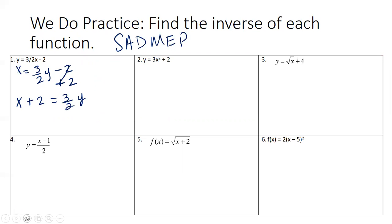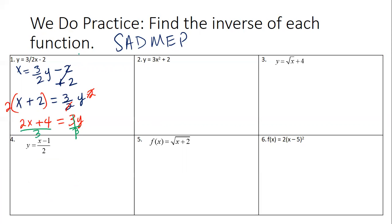Next: is there anything I can multiply or divide to get y? A fraction is a combination of multiplication and division — it's dividing by two in the denominator, so to get rid of it I multiply. I multiply everything on the other side by two, giving me 2x + 4 = 3y. Y is not by itself yet, so I divide by three. My inverse is (2x + 4) / 3.